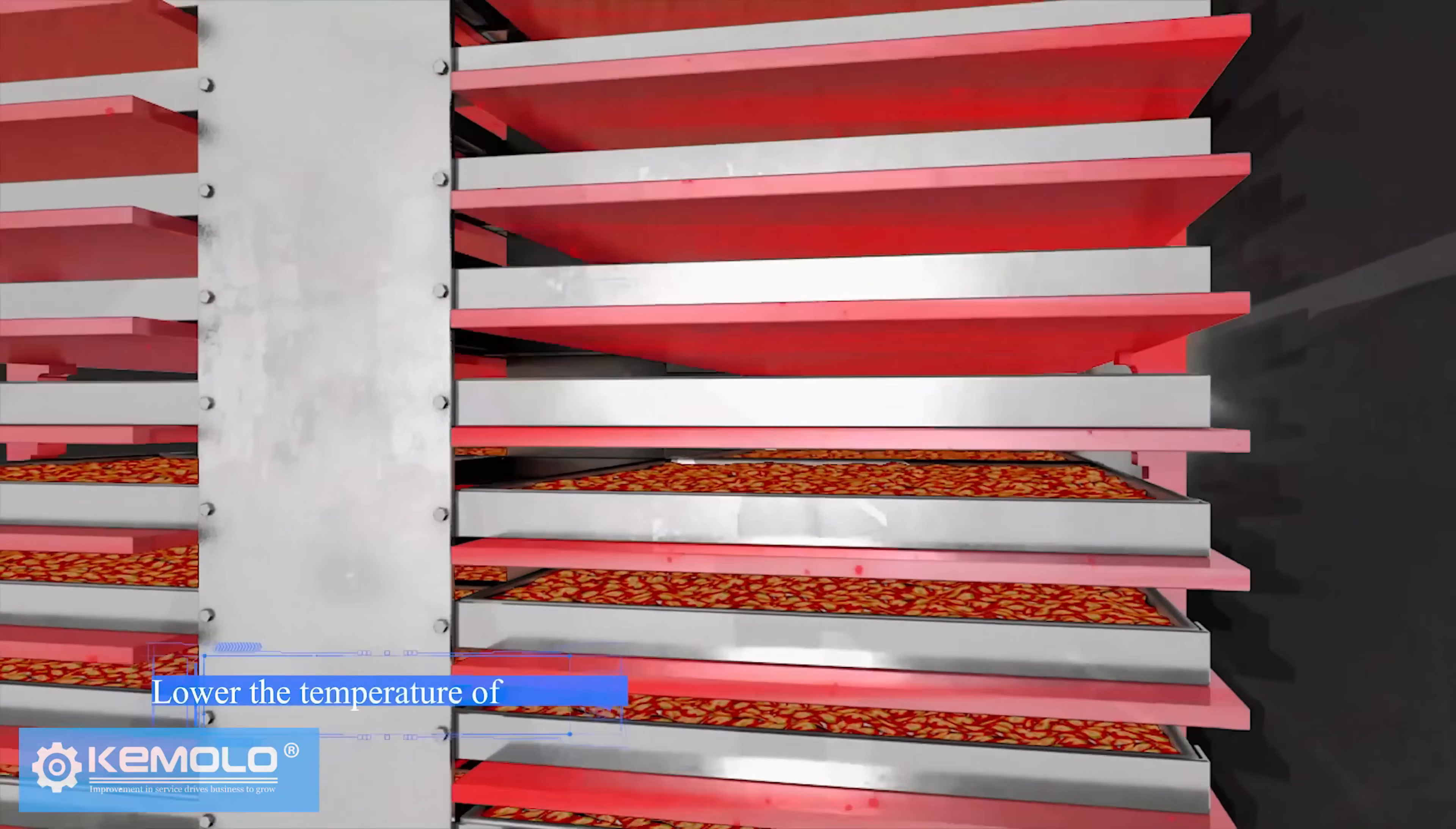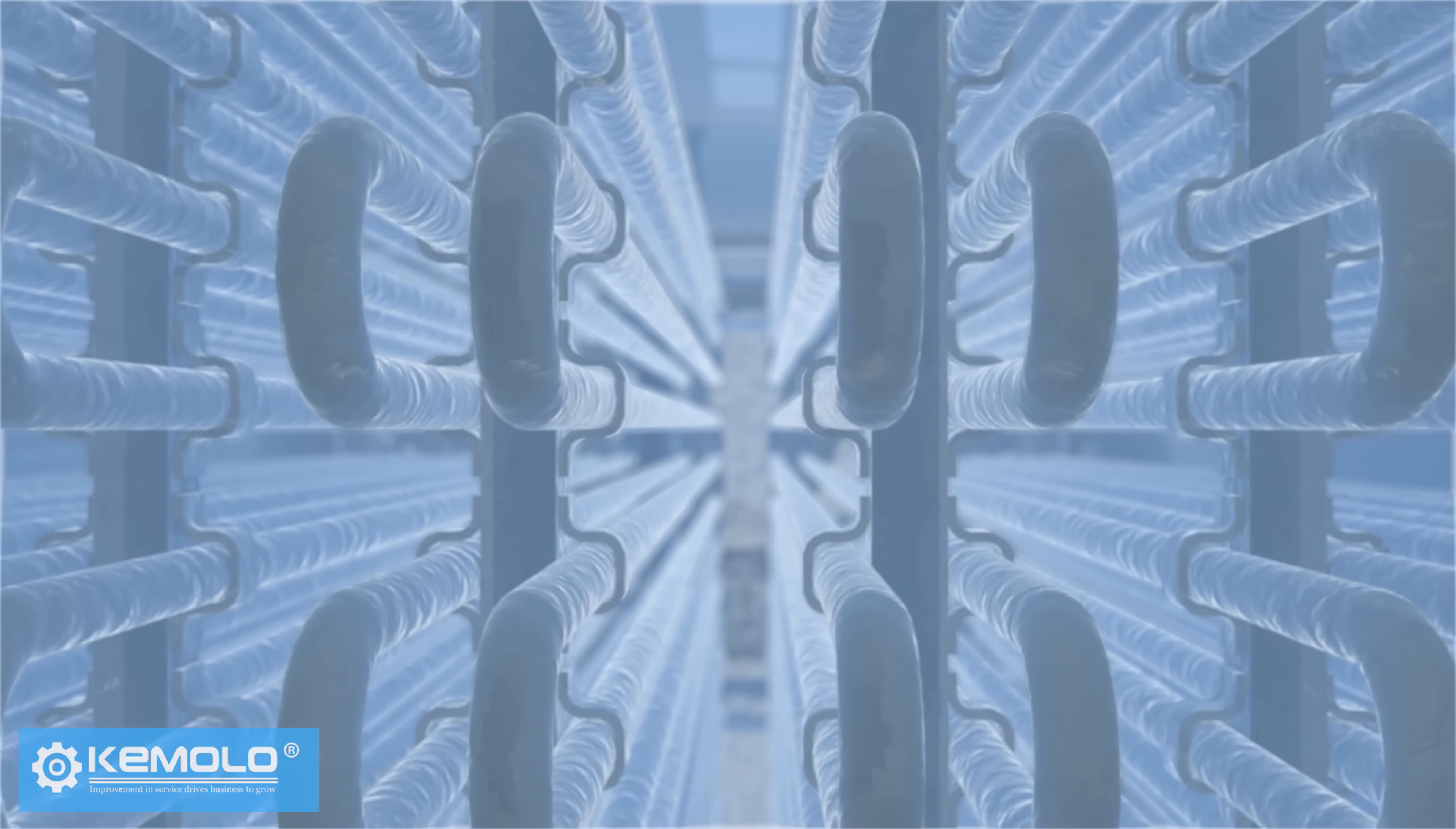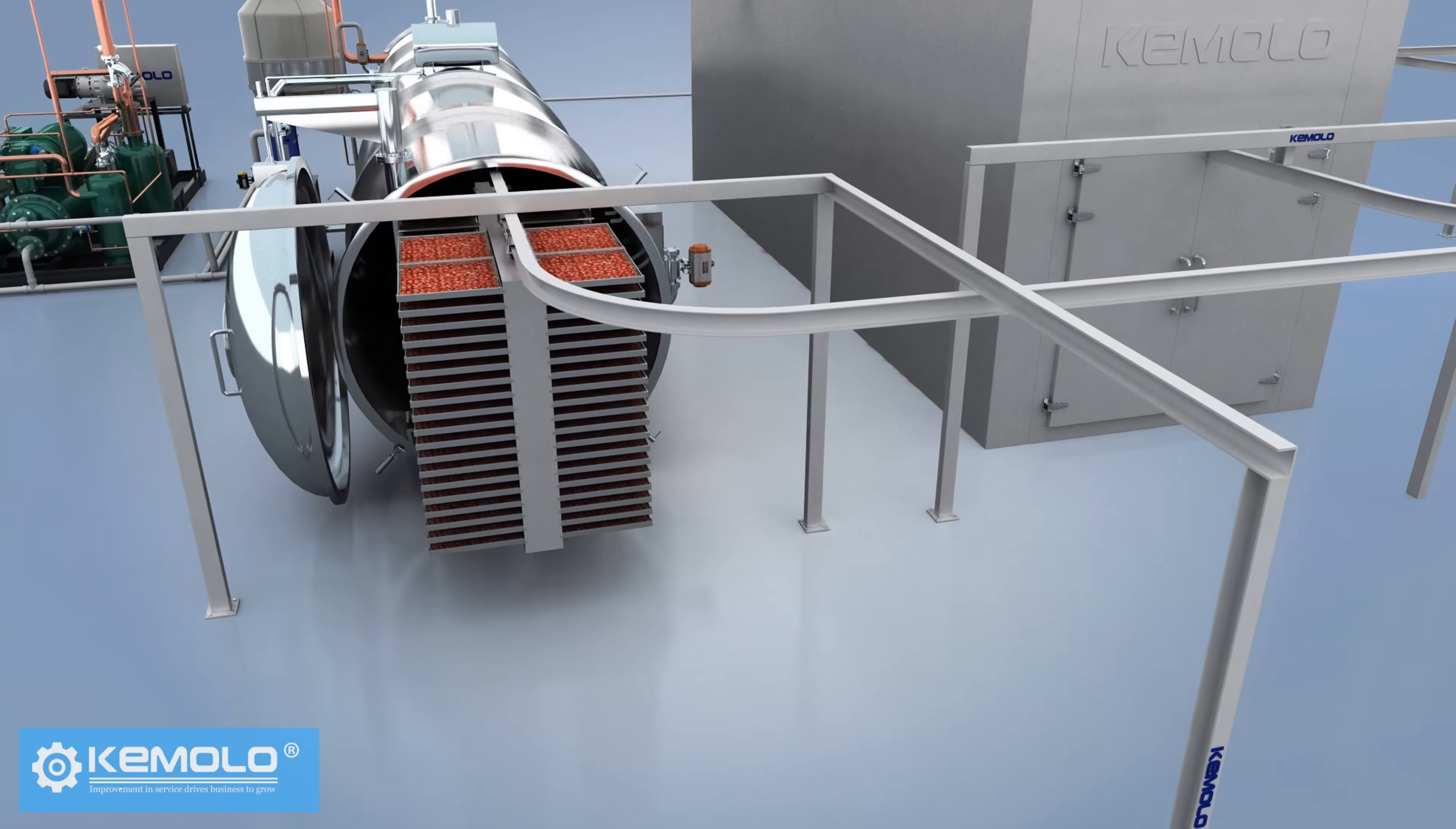At this time, it is necessary to lower the temperature of the shelf and release the vacuum for discharging. After discharging, the frost on the water vapor collector needs to be defrosted for the next batch of production. Therefore, the freeze-drying must be produced in batches and the interval between each batch is about 1 to 2 hours.